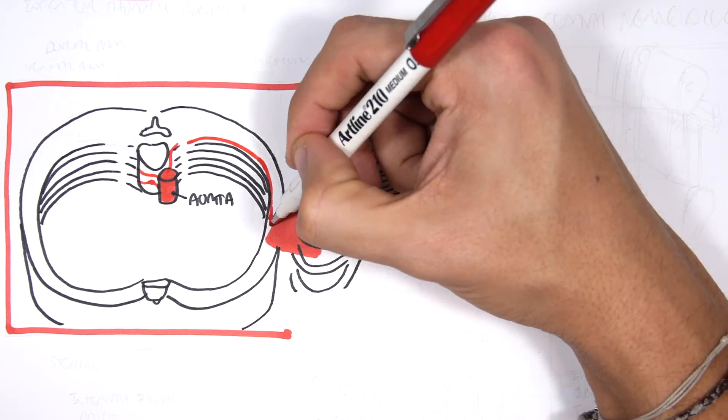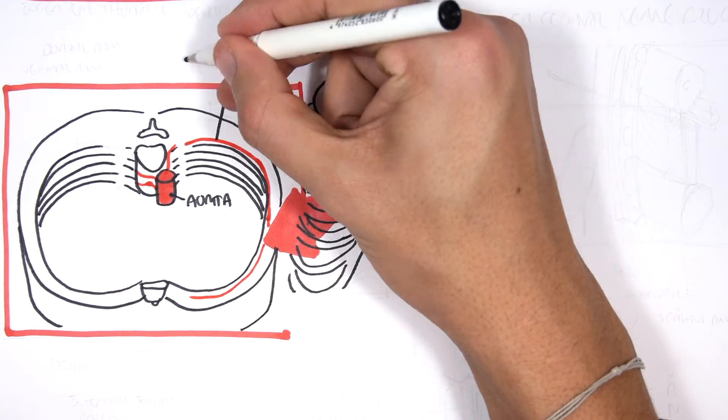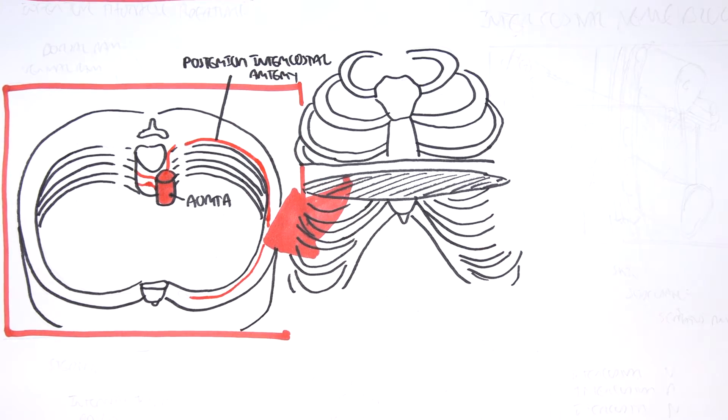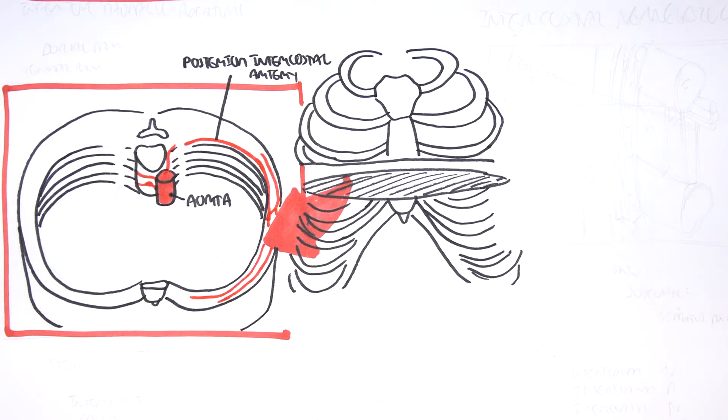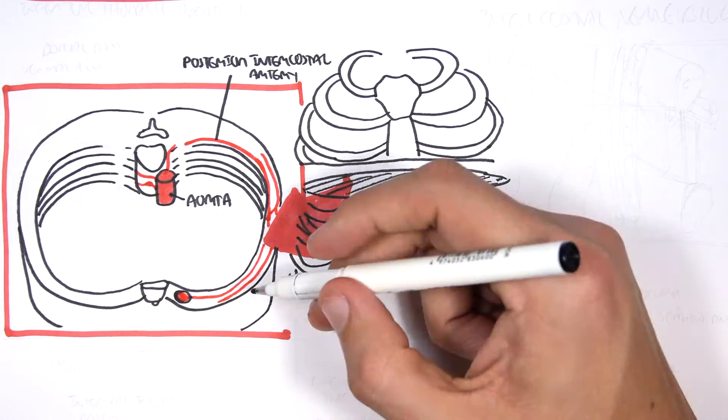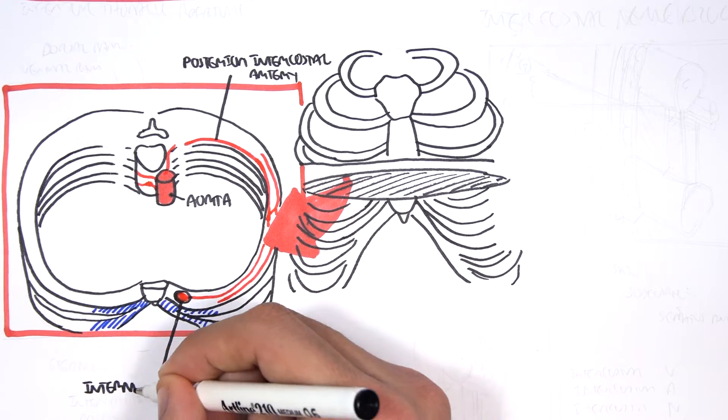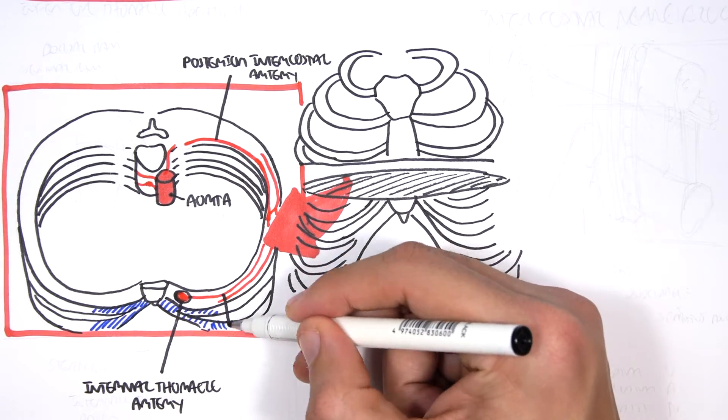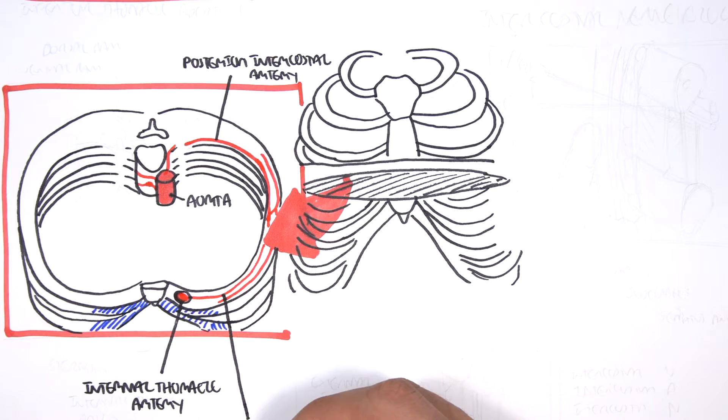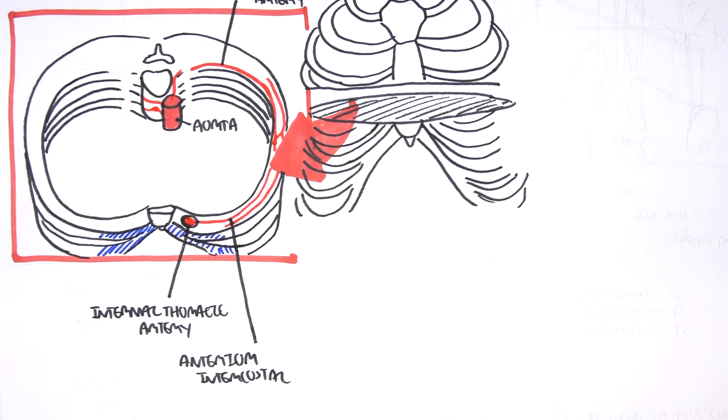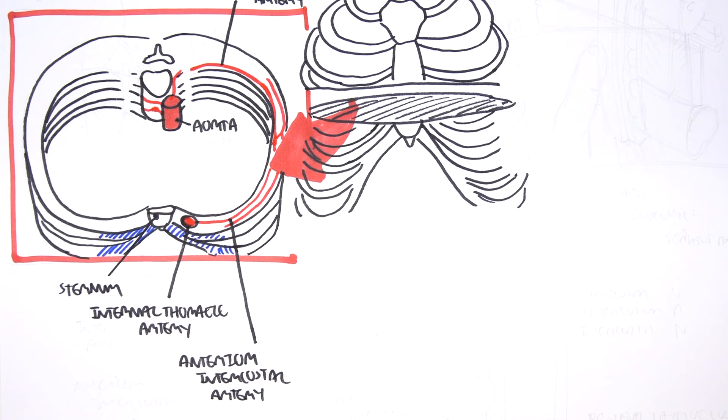So this particular artery here coming off is the posterior intercostal arteries. So the posterior intercostal artery comes off the thoracic aorta. Coming around this area, we also have the internal thoracic artery, which is a branch of the subclavian. But essentially the internal thoracic artery gives off the anterior intercostal artery. So the anterior intercostal artery and the posterior intercostal artery will anastomose. And these guys will supply the ribs, essentially, as well as the parietal pleura, which surrounds the lung.